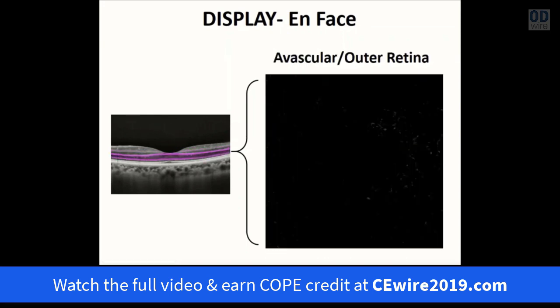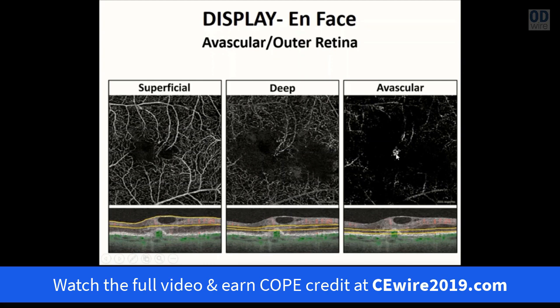The avascular or outer retinal en face display — with boundaries varying by instrument — includes some combination of photoreceptors and RPE. These structures are normally avascular, so the display should be black or void of signal. This display was specifically designed to aid in detecting choroidal neovascular membranes. Here is an example of an eye with AMD and a very small choroidal neovascular membrane — a circular cluster of vessels readily detected and isolated on this avascular en face display.